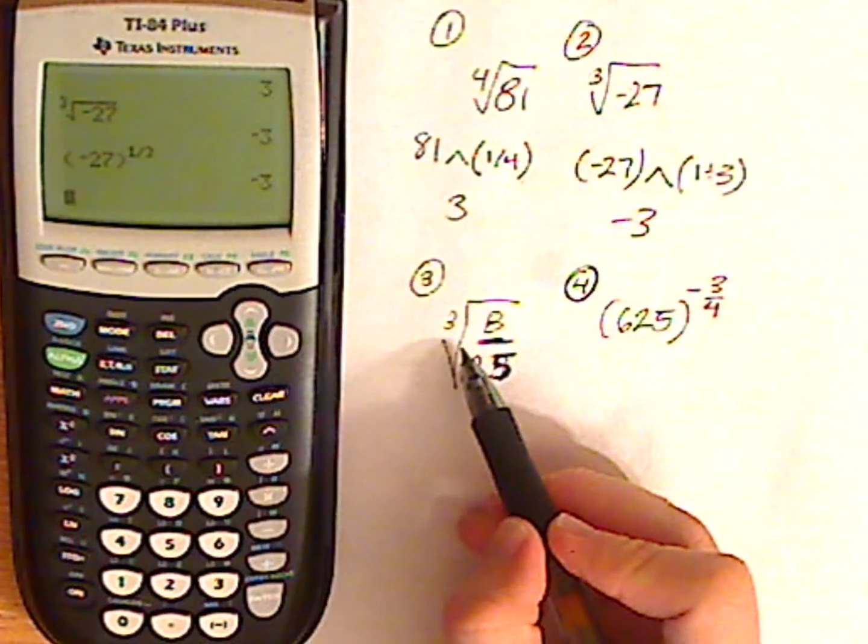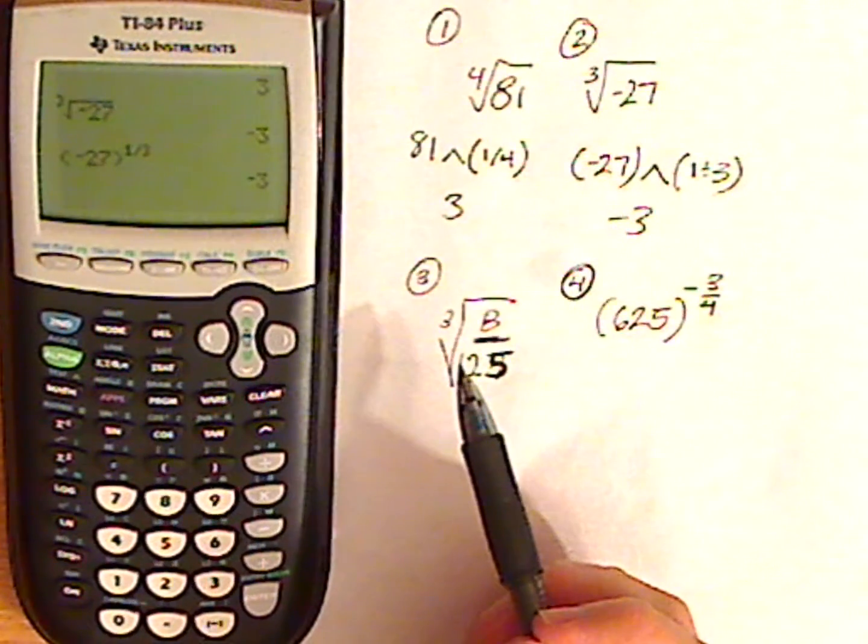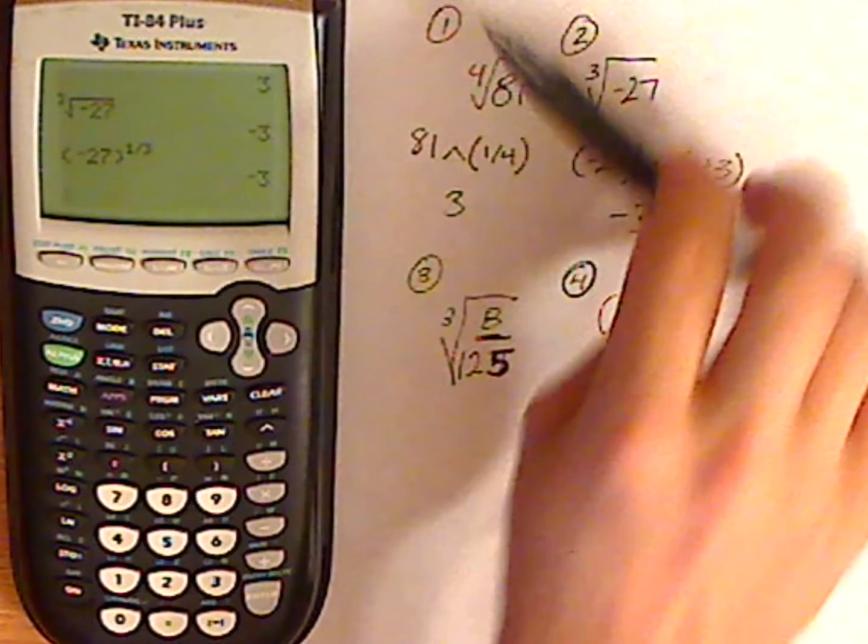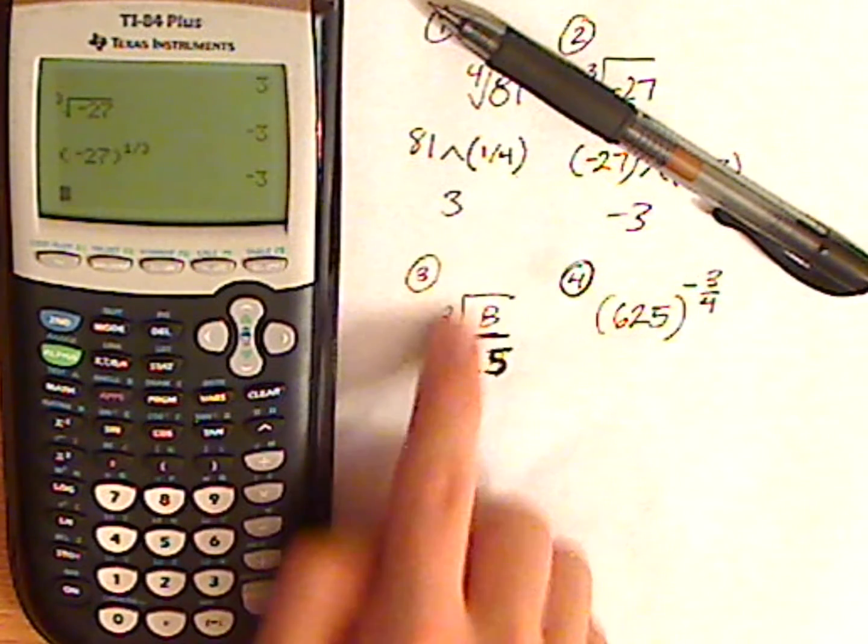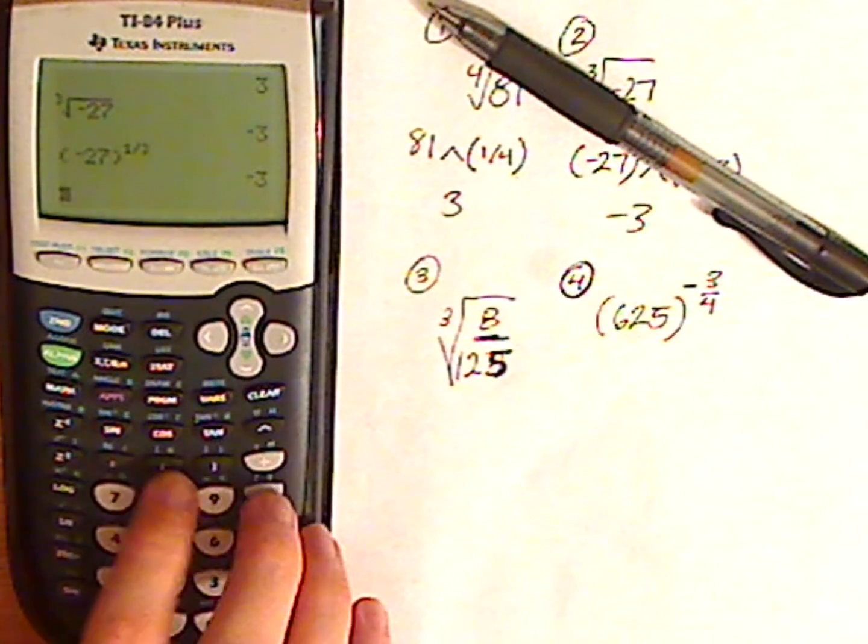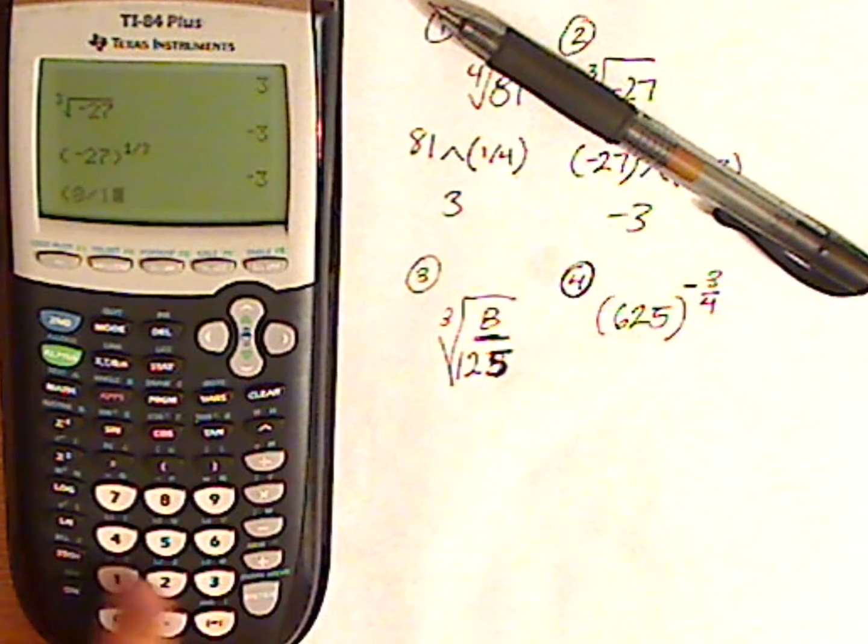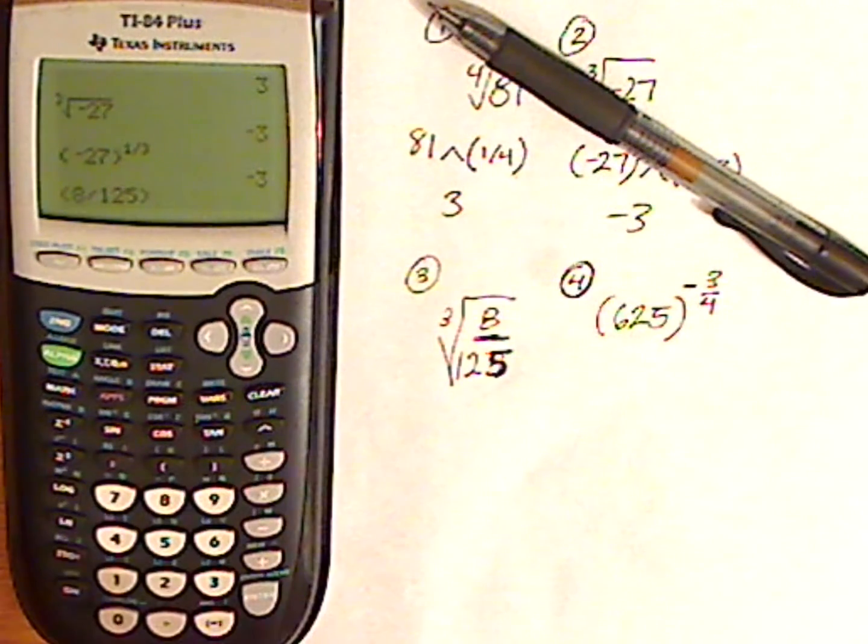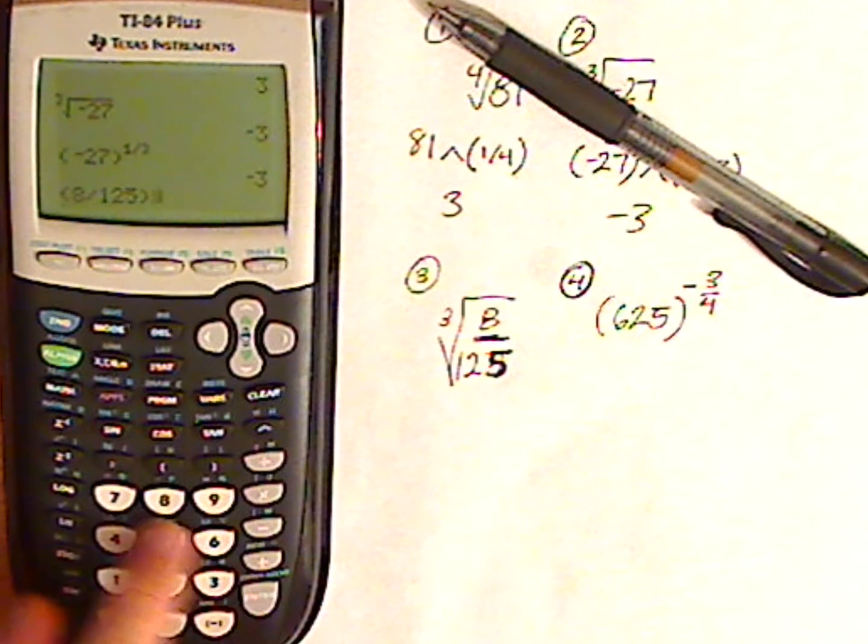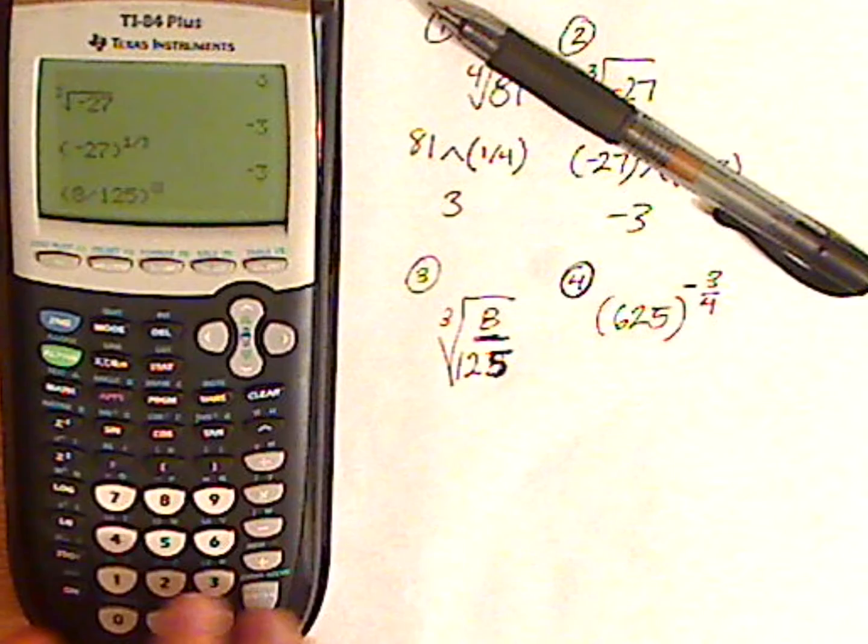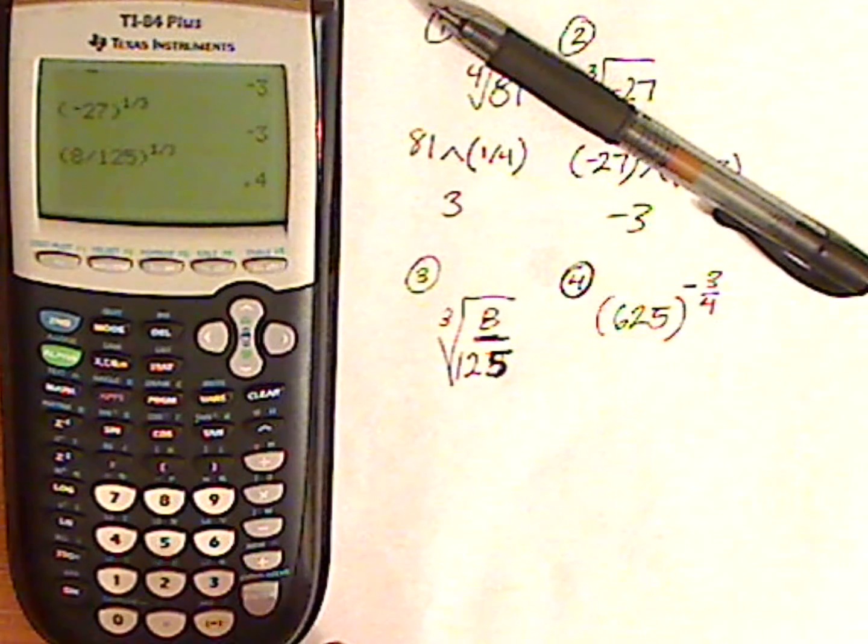Alright, now I'll type this in. Again, I can use rational exponents. I can use one third. So let me do that. I'm going to put this whole thing in parentheses because this is what's under the radical. So parentheses, 8 divided by 125, close parentheses, and now you're raising it to the one third. 1 divided by 3. There you go. And I get 0.4.